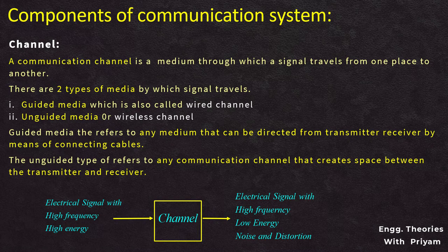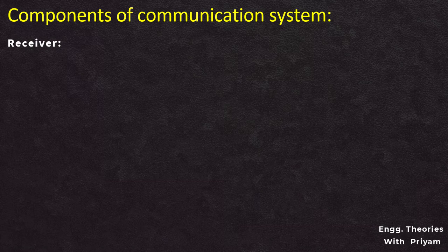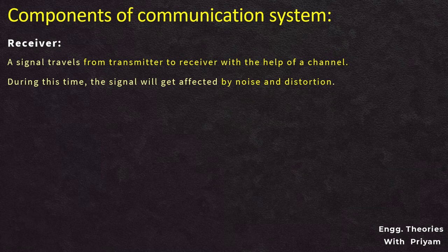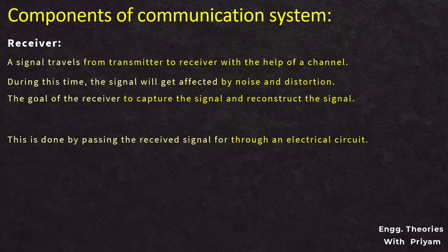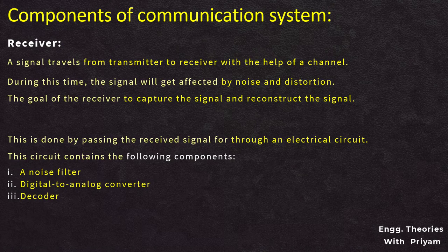The next element is the receiver. The receiver receives either electromagnetic waves if the channel is an unguided medium, or an electrical signal if the channel is a guided medium. The goal of the receiver is to capture the signal and reconstruct the original transmitted signal before giving it as input to the output transducer. This is done by passing the received signal through an electrical circuit containing a noise filter, a digital-to-analog converter, a decoder, a demodulator, and a signal amplifier.